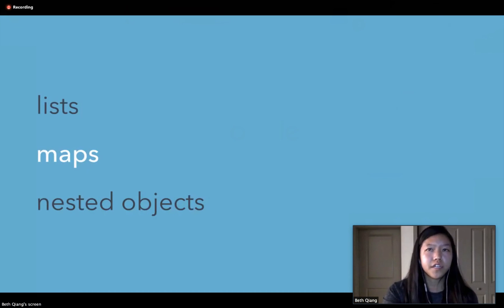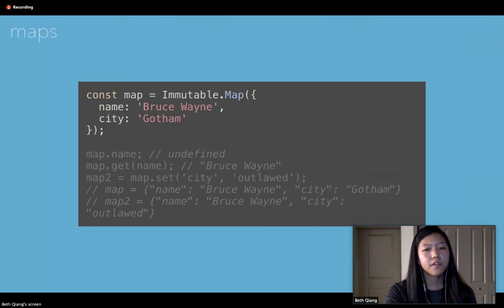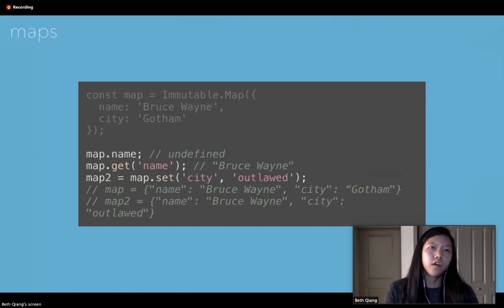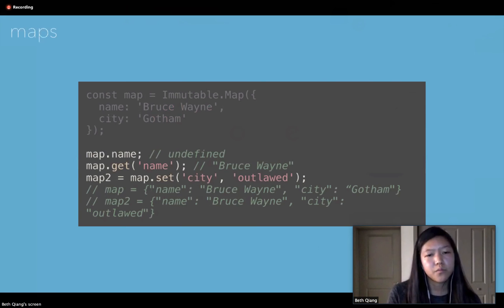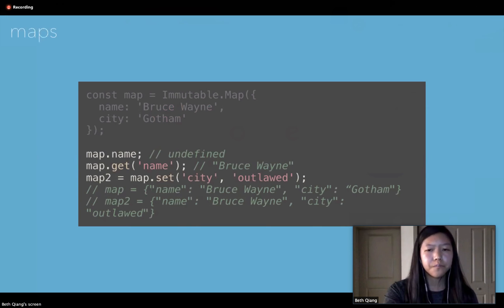The next data collection is Map, which is the equivalent of a JavaScript object. It takes a set of key-value pairs, and like the List method, you can feed it a normal JavaScript object and it will automatically convert it. We can't use dot or bracket notation to access properties — instead we use get and set. Map.get takes a string key to access a value, and set takes the key as the first argument and the new value as the second. The original map remains unchanged while a second map reflects the modifications.